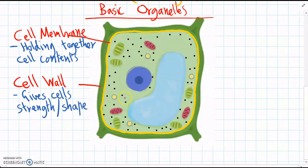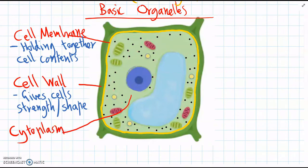And then the other main section in cells is all the liquid on the inside. So if the membrane is like the plastic bag holding everything together, the liquid inside we call the cytoplasm. And the cytoplasm contains all the other organelles plus the liquid.